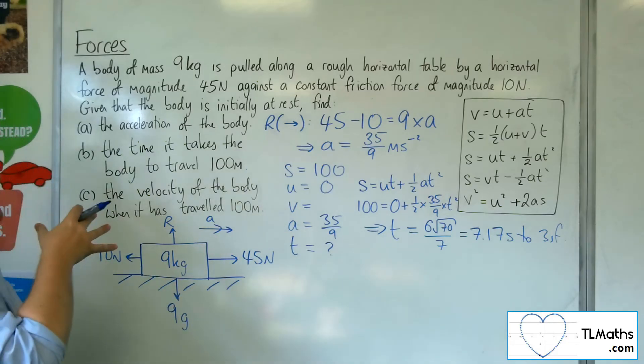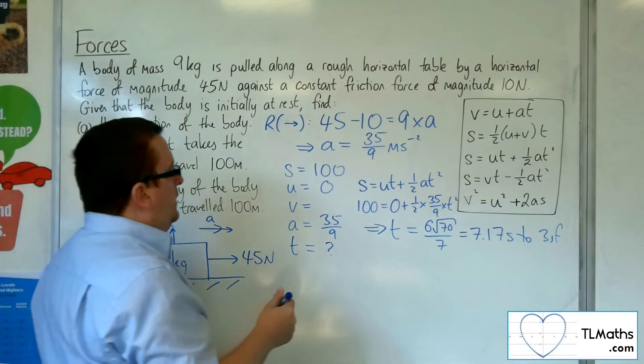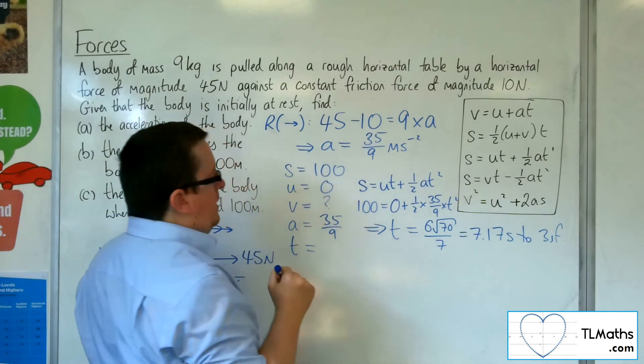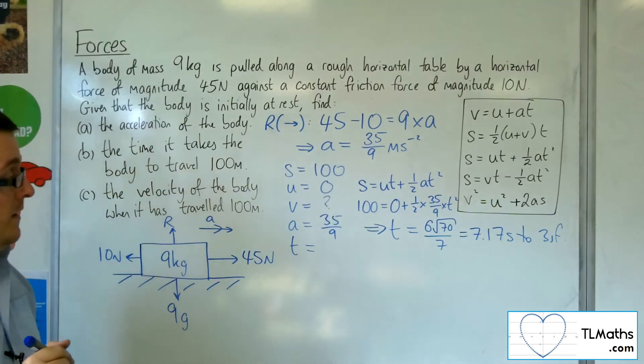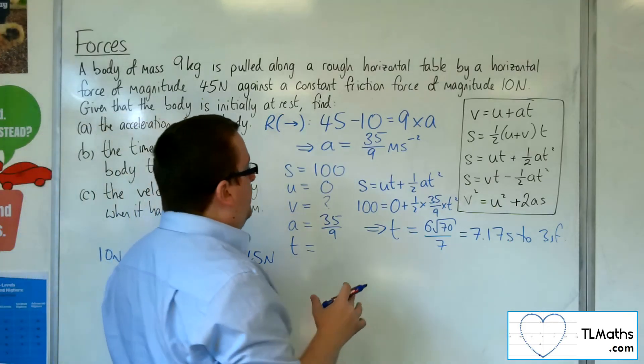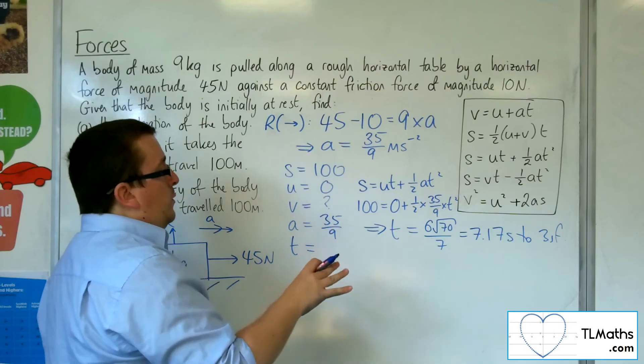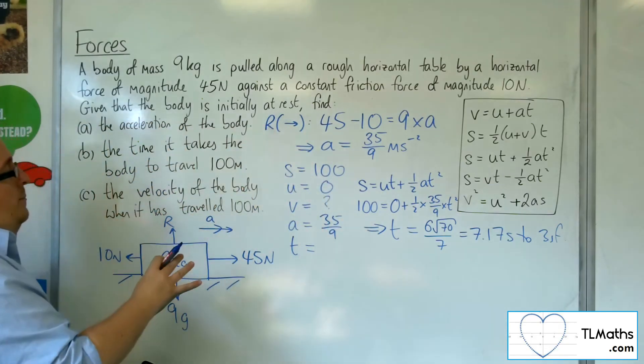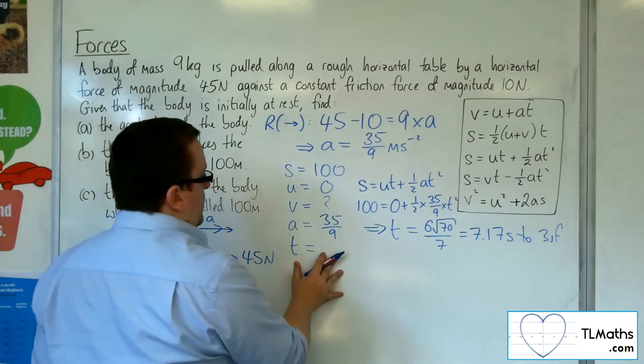All right. Now, the velocity of the body when it has travelled 100 metres. So now what I can do is I can write in that I want velocity. OK. I'm going to solve it using the SUVAT equations without requirement of using part B. OK. So I can go just with that information.